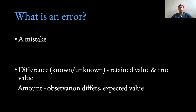Now what is an error? The literal definition of an error is a mistake, while the statistical definition of an error is the difference between the retained value and the true value. It can also be defined as the amount by which an observation differs from its expected value.